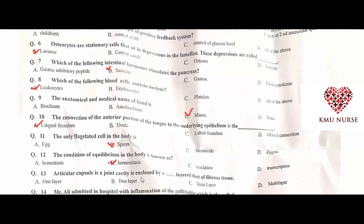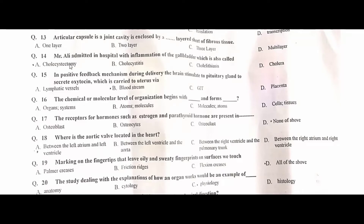The articular capsule is a joint cavity enclosed by a two-layered sheet of fibrous tissue — B is the correct option. Mr. Ali was admitted to hospital with inflammation of the gallbladder, which is also called cholecystitis — B is the correct option.